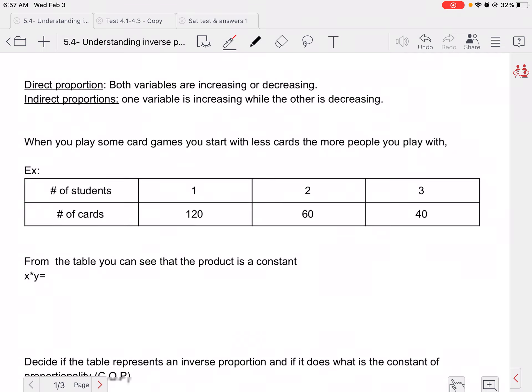And one of the things is when we're looking at a constant of proportionality, we can see that one, two, three is going up, and 120, 60, 40 is going down. So that's a sign right away that it could be an inverse proportion. If they were both going up, definitely not an inverse proportion. If they were both going down, again, that's definitely not an indirect or inverse proportion.